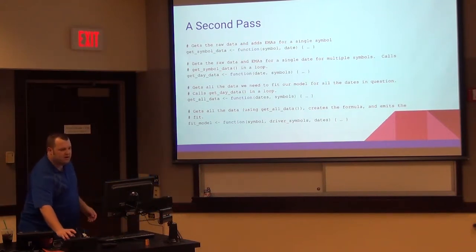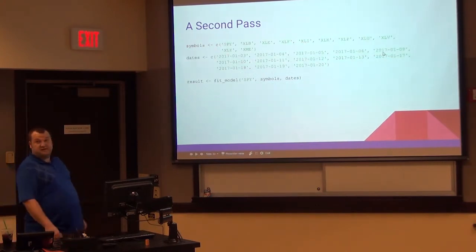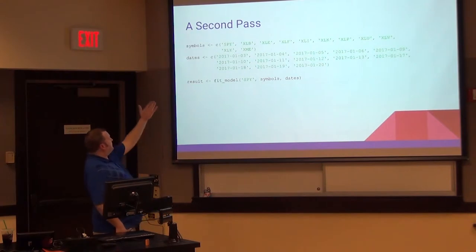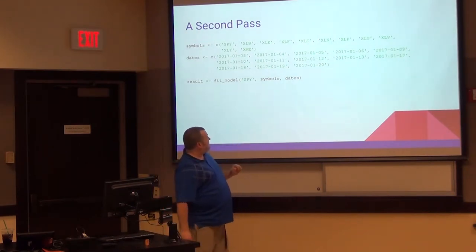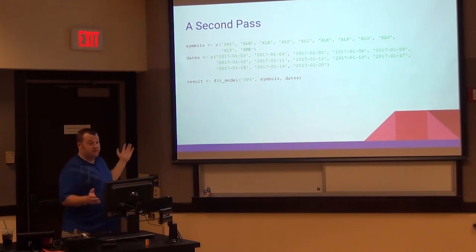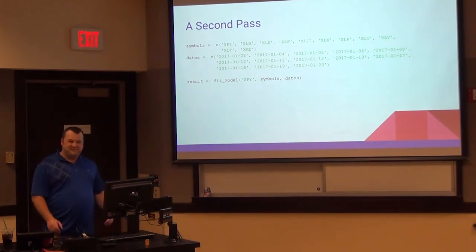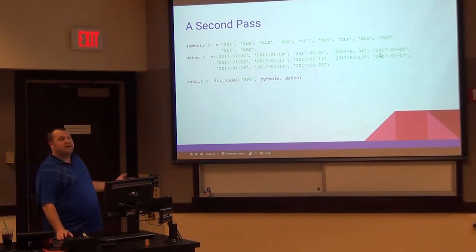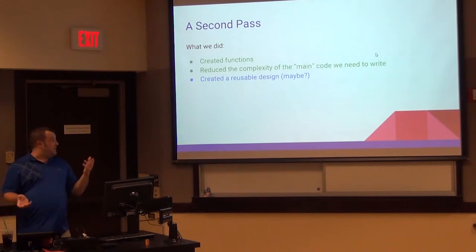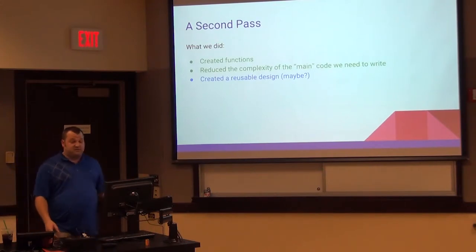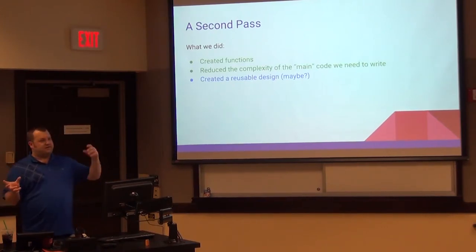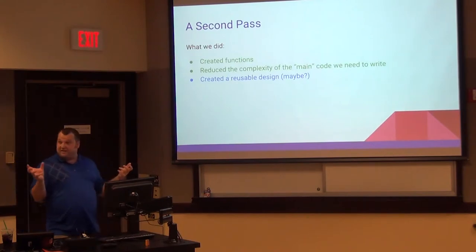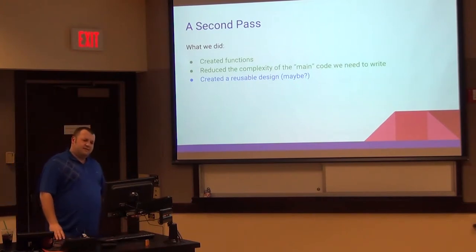So here's a proposal. We will create a get symbol data which is going to get the raw data and add EMAs for a single symbol. Seems sensible because we need that. Get day data will take a list of symbols and essentially c-bind them together. We're going to stack them so that every row has the current observation of every symbol there and the EMA of every symbol. Get all data is going to create our all data structure. It's going to call get day data which will in turn call get symbol data to create the entire data set we need to fit our model. And then we're going to create fit model whose job will be to create the formula and call lm and return us the results. That seems pretty reasonable. Because now we've got, we've encapsulated all the complexity. We only have four functions here. And then we get code that looks like this. This is all we have to write to fit our model. So we set our symbols, set our dates, say we actually pass it the symbol we want to predict and the symbols we want to use as drivers. And the dates. That's it. And we get a result.